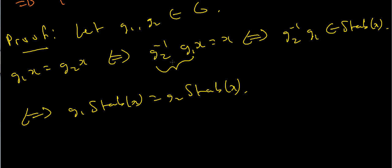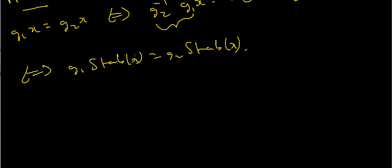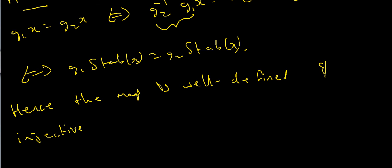But because this goes in both directions, because I've had an if and only if statement each time, then it follows that the map is well-defined and injective. It's well-defined in one direction and injective in the other. So hence the map is well-defined and injective. And it's also surjective since G was arbitrarily chosen, meaning by definition X was acting on by all elements of G.